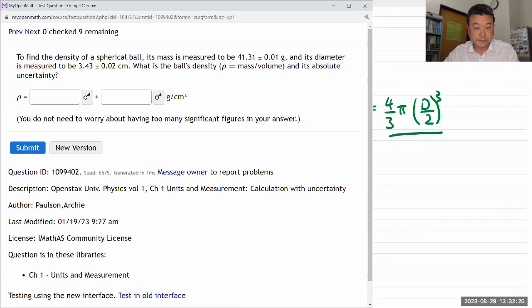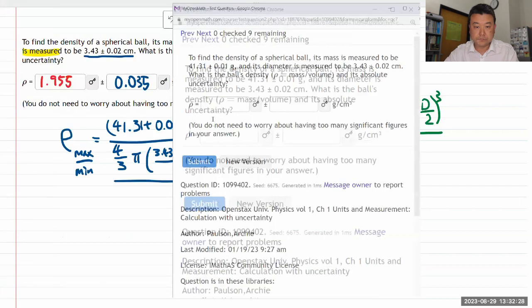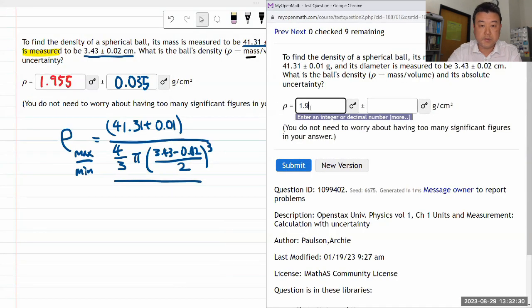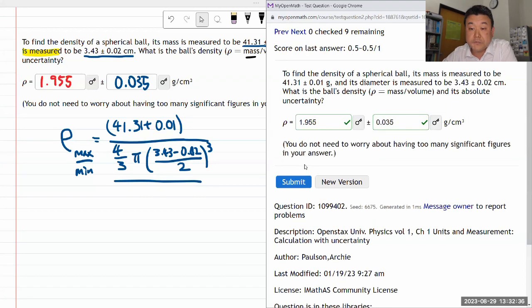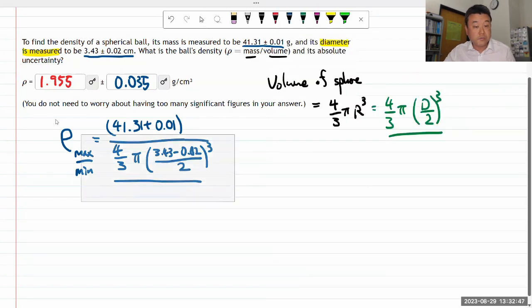1.955 as the best estimate and 0.035 as the uncertainty—yeah, it says that's correct. That's good enough for most things we do. In fact, our upcoming lab is exactly on errors and uncertainty, and this approach is what I would recommend in most circumstances.